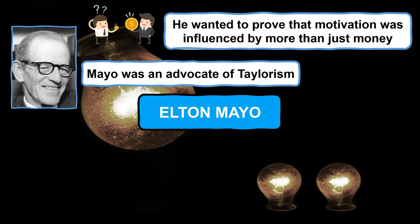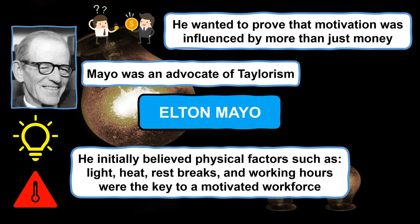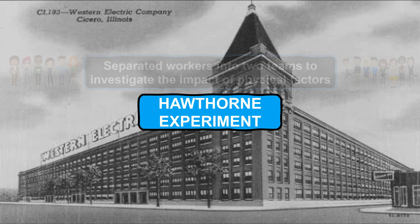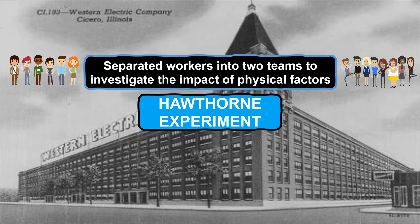He initially thought that employee motivation was influenced by physical factors such as a change in working conditions, including the amount of heating or lighting provided in the working environment or how rest breaks were regulated. Therefore, during the 1920s, he set up and conducted a series of tests known as the Hawthorne Studies or Hawthorne Experiment. During the experiment, Mayo separated workers from the Hawthorne factory based in Illinois into two teams, with the aim of investigating the impact of these physical factors on their motivation levels and respective productivity.